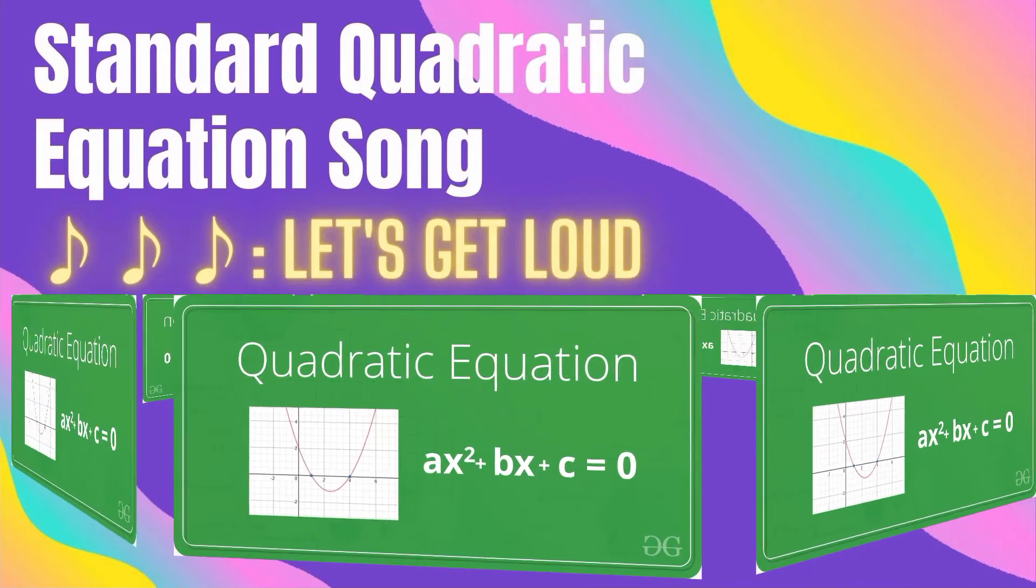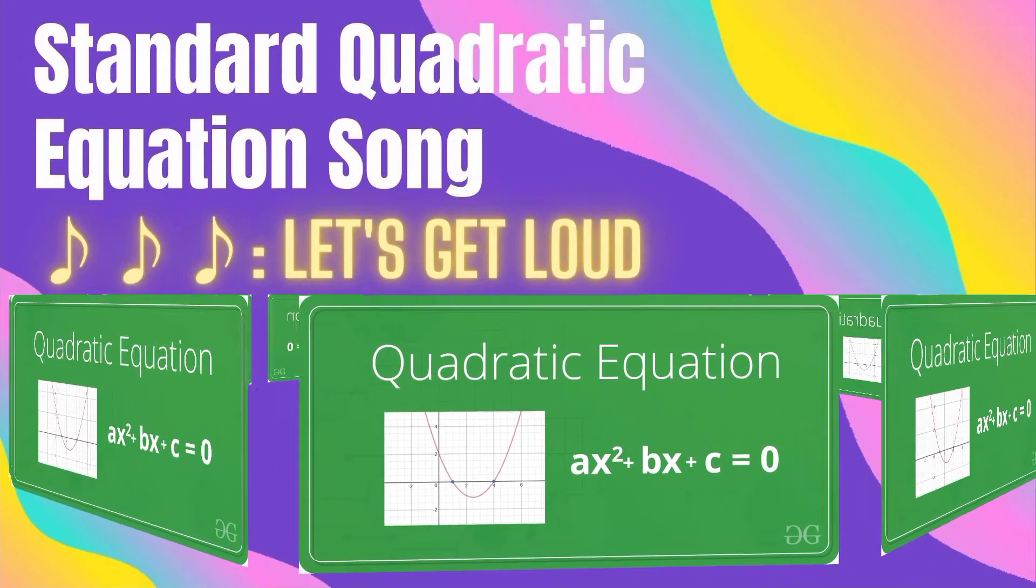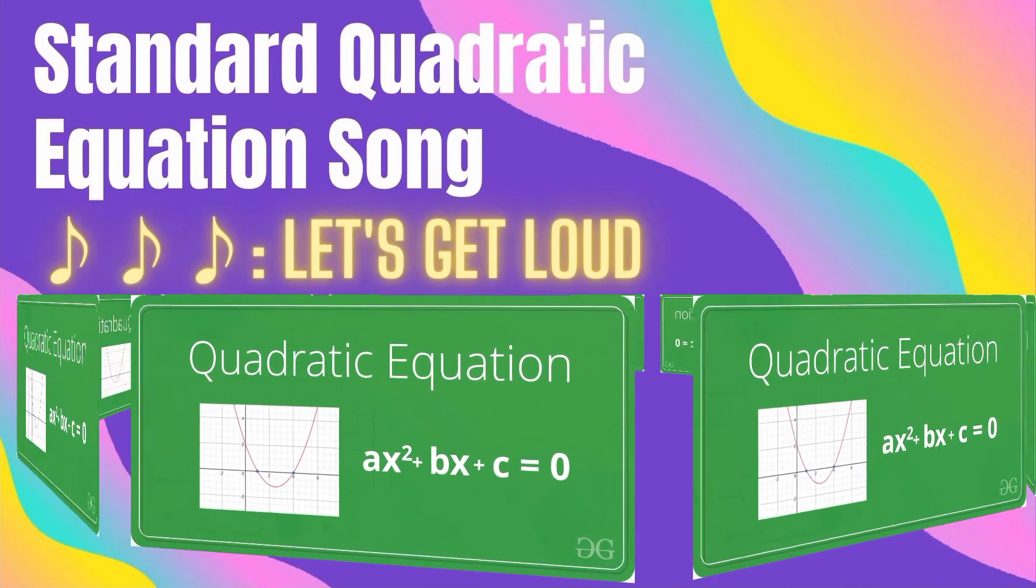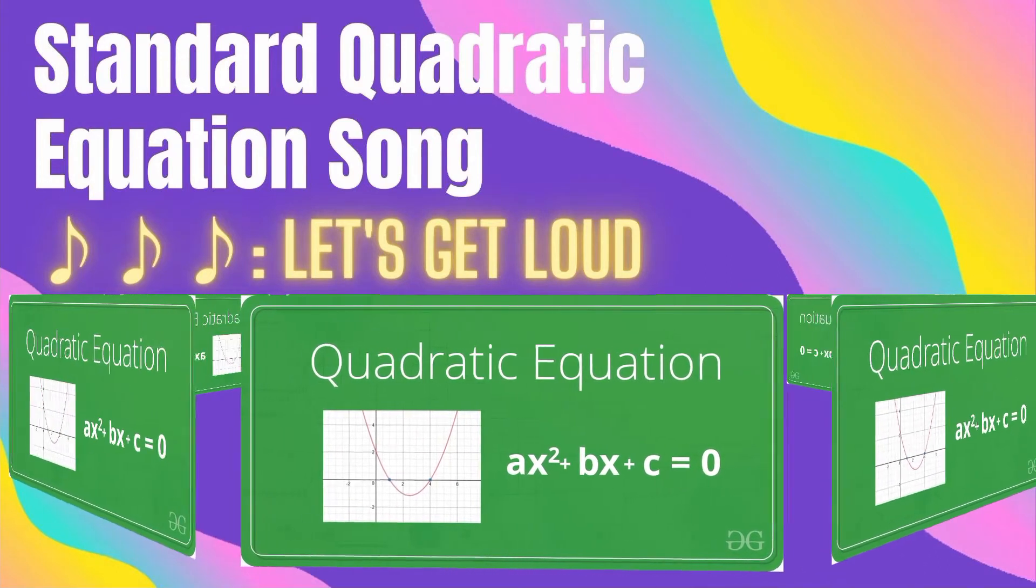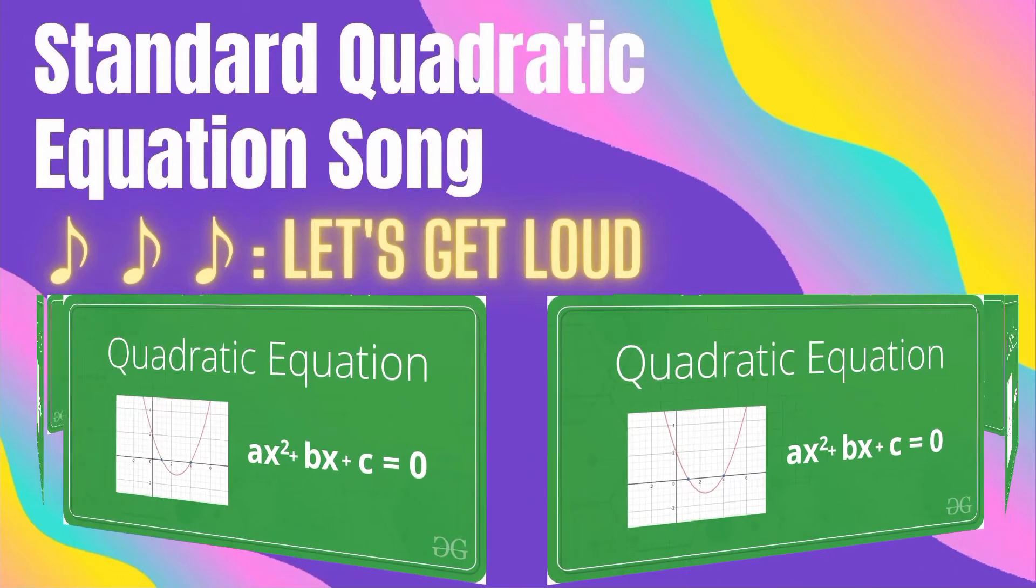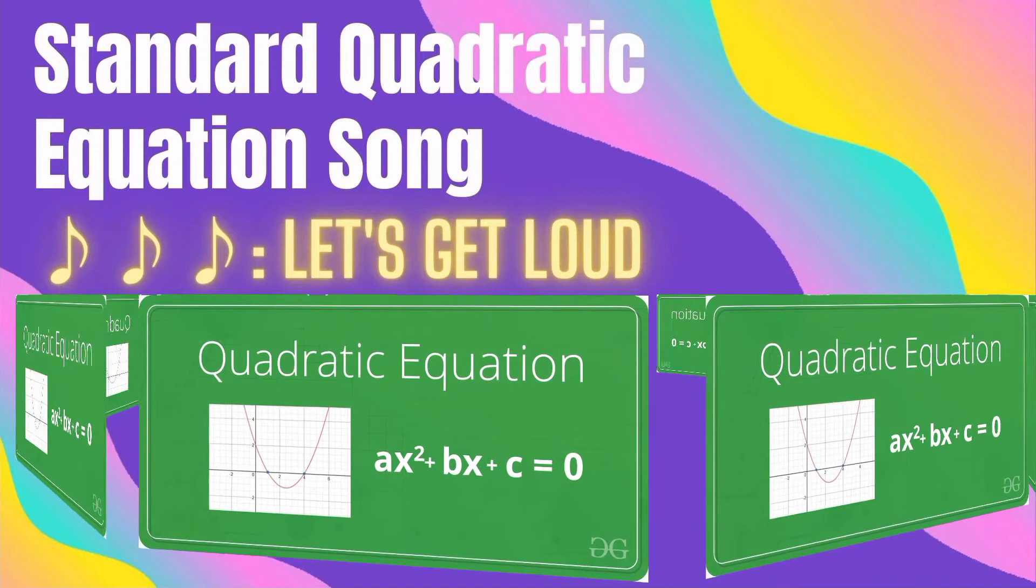A x squared plus B x plus C equals zero, standard form. A x squared plus B x plus C equals zero, standard form. So quadratic formula...